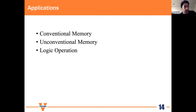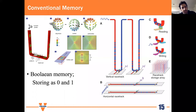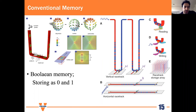For applications, we will look at three types: conventional memory, unconventional memory which we have been working on, and logic operations. For conventional memory, skyrmions and domain walls are similar: the absence of a skyrmion is a zero-bit and its presence is a one-bit. Applying spin current moves them along, and a read head reads the sequence of zeros and ones as stored information.